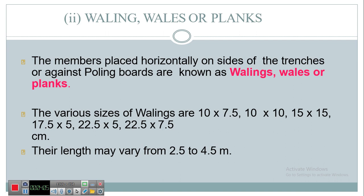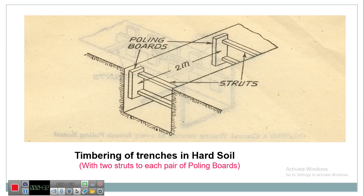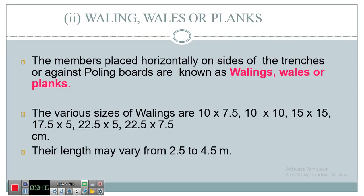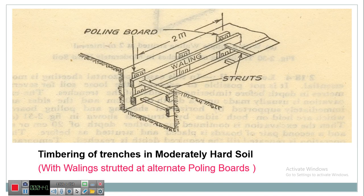Another member is walling, also known as wells or planks. Members placed horizontally on the sides of the trenches against the polling boards are known as walling. The sizes are 10×10 cm, and 15×15 cm, with length varying from 2.5 to 4.5 meters. In the image you can see the walling — it is the horizontal member.